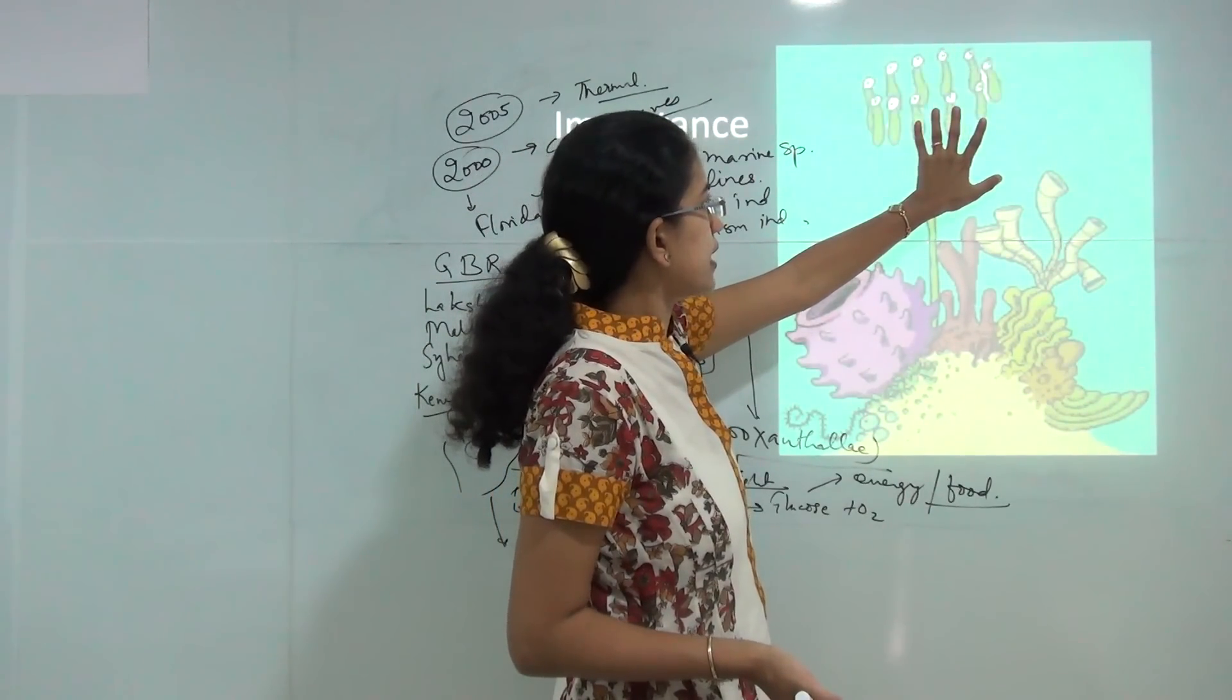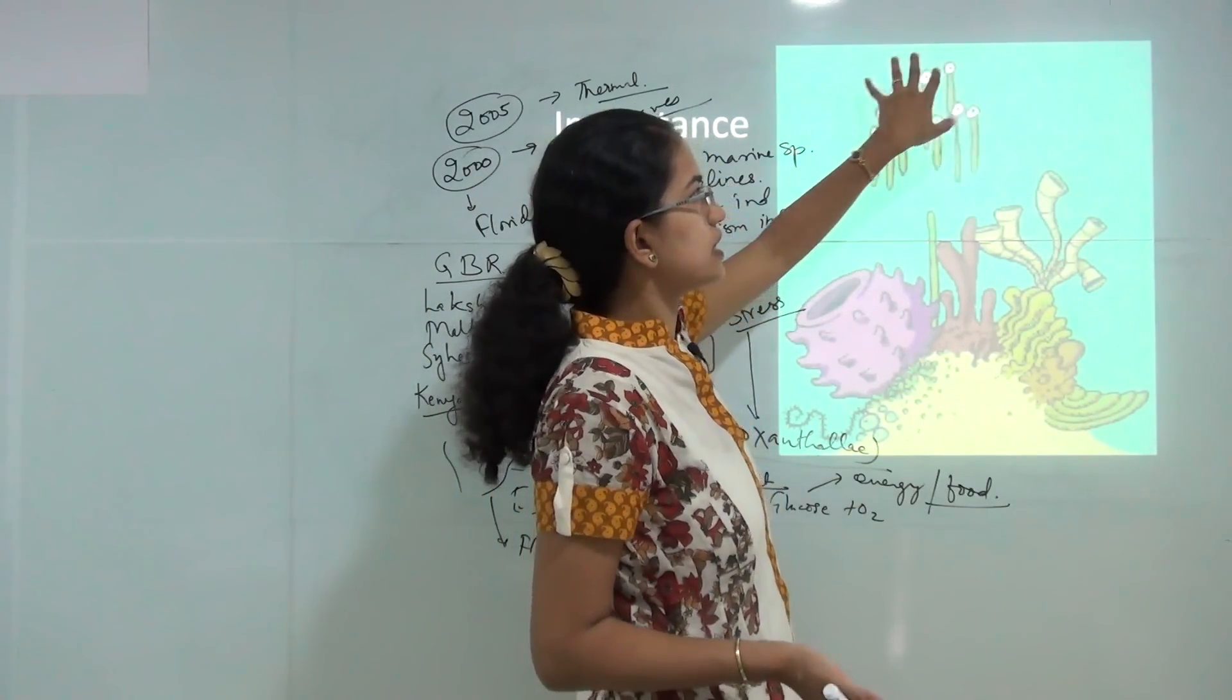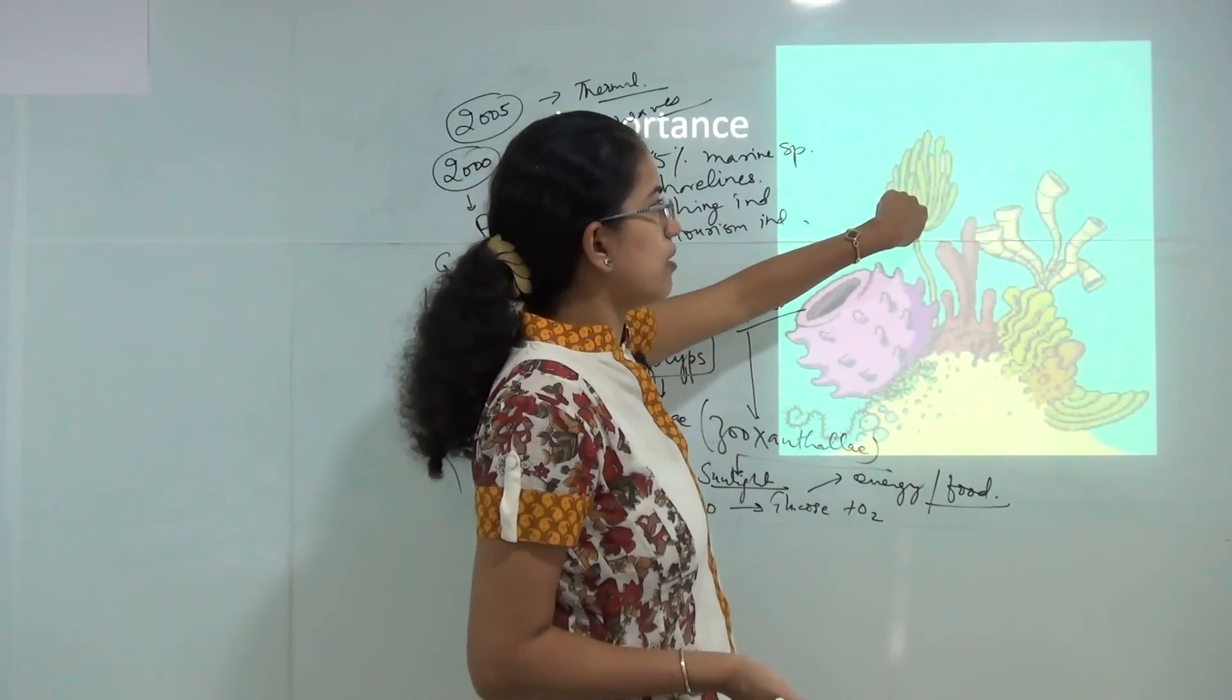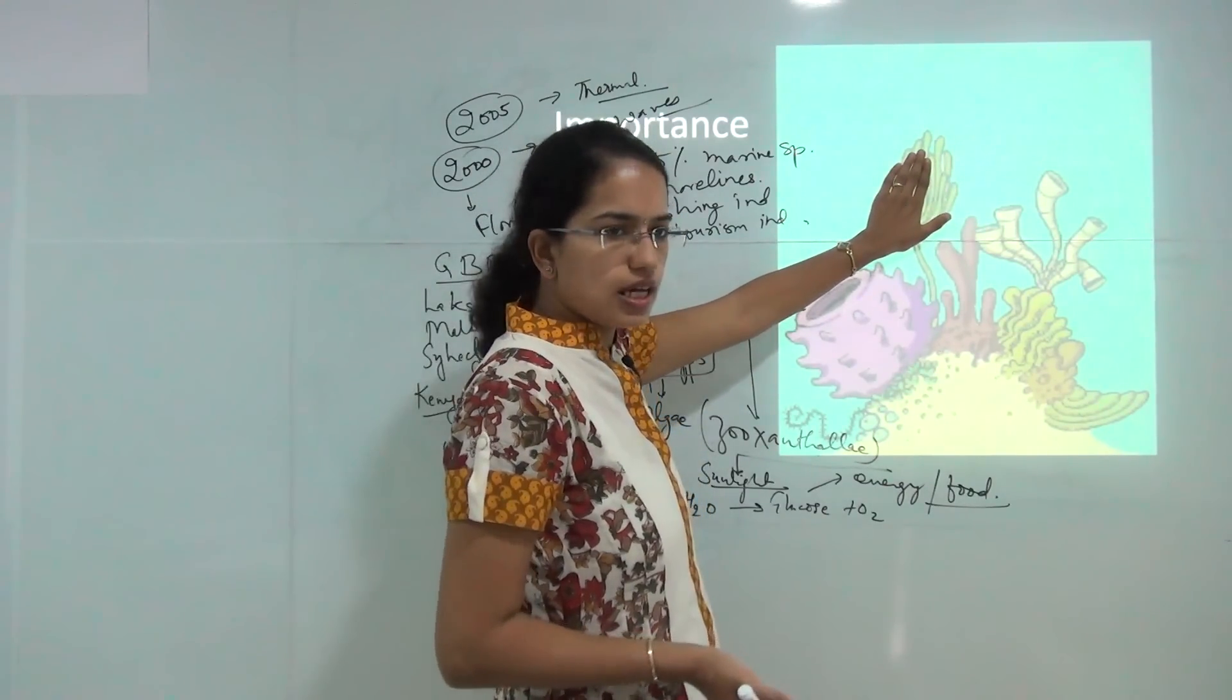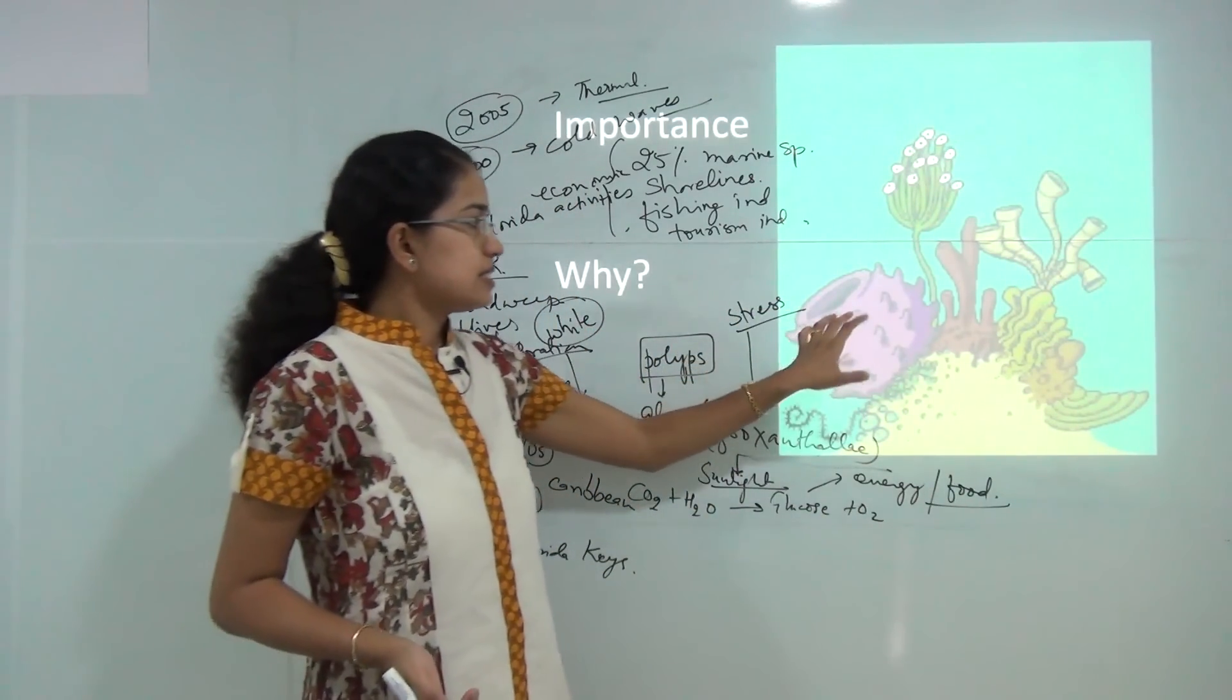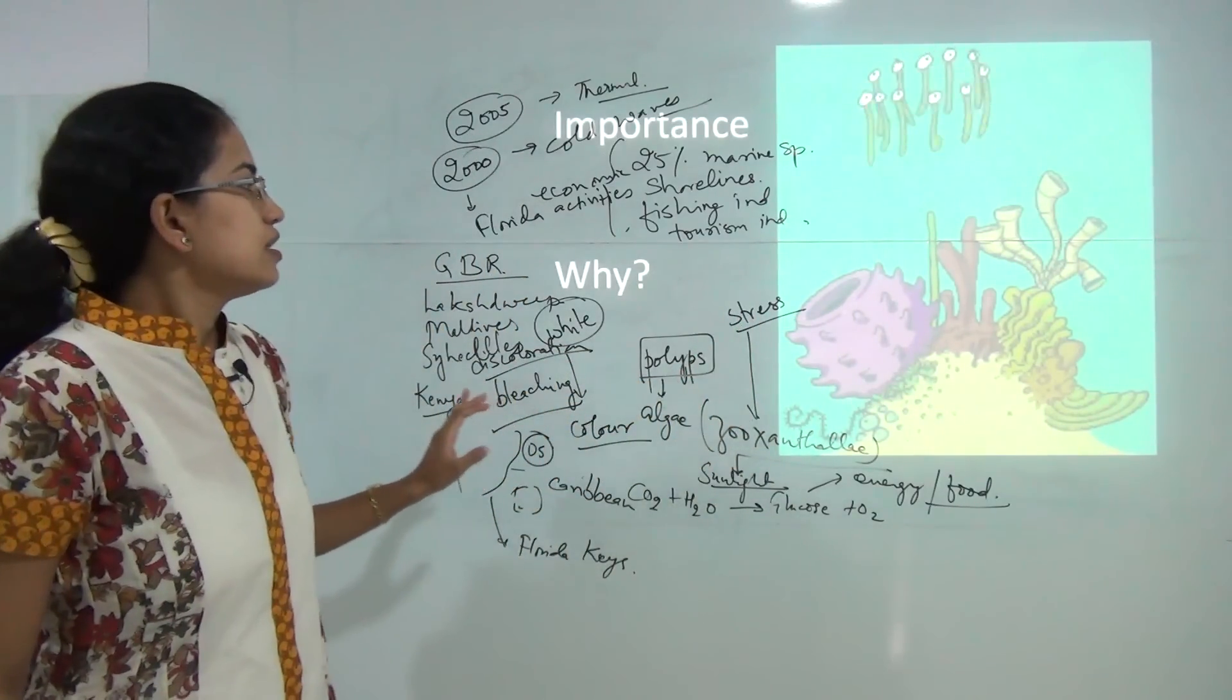As I said once the algae come under stress it moves away from the coral however when the temperature ranges comes back to normal it may come back again to the coral and stick back here. As you can see in this diagram you have the green corals here and the white algae which live in a symbiotic relationship and once there is a thermal stress they move away and this leads to discoloration for the polyp here. However, in cases of acute stress it leads to death of the coral.